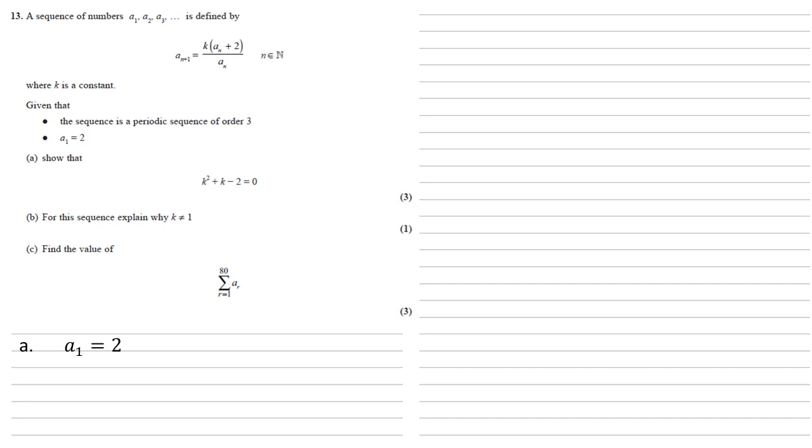So we've got that A1 equals 2. Let's put this into our formula to find the next term. So A n plus 1, that's going to become our A2, equals K times A1 plus 2 all over A1. So K times 2 plus 2 all over 2, which simplifies to give us 2K.